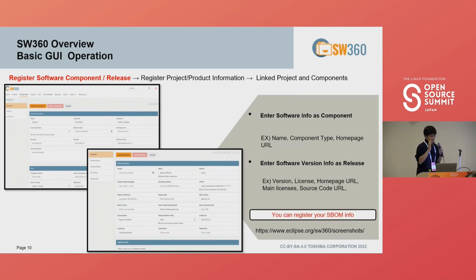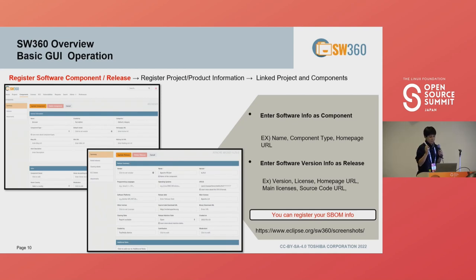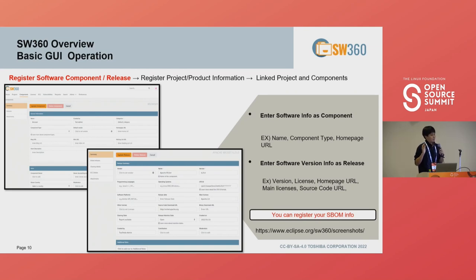As a basic GUI operation, here is how to register. First, please register your software information — you can enter the name, component type, homepage URL, etc. Next, enter the software version as a release with version number, license, homepage URL, and main license. This matters because when open source software changes or upgrades versions, the license may change. SW360's architecture handles this.